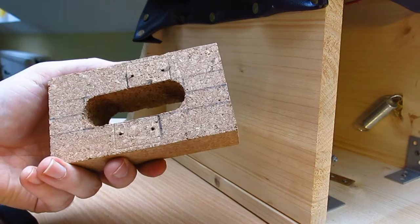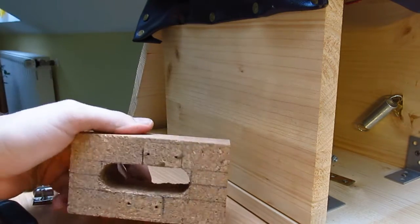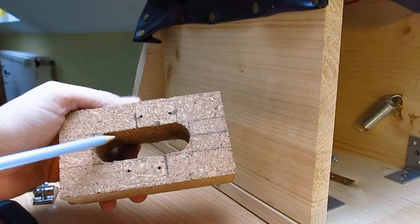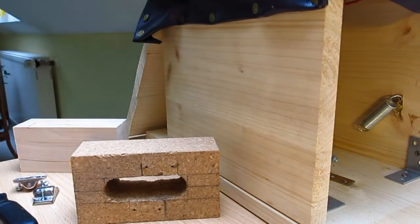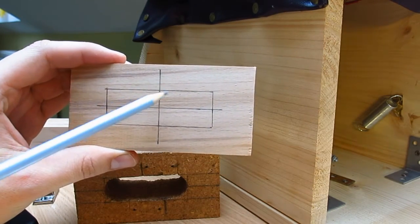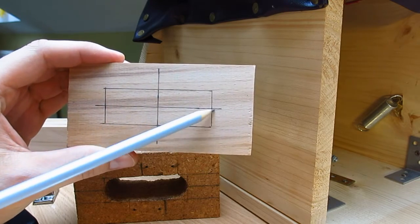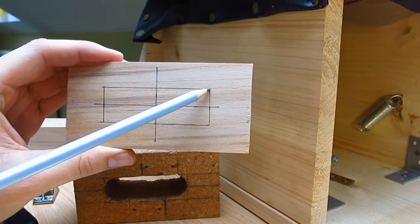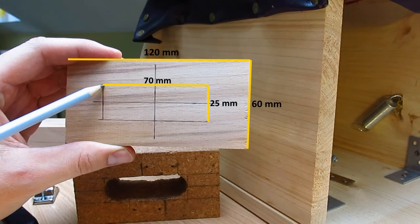I thought this block of cork wouldn't hold together if I cut a bigger hole here. So I did some measurements and it turns out that I need to cut a hole here, so it's 70 millimeters here and 2.25 millimeters here.